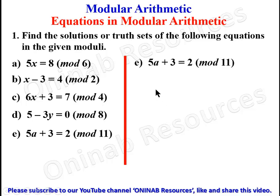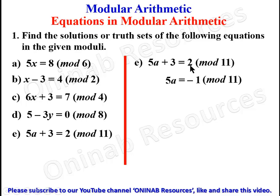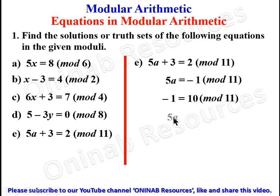Problem (e): 5a + 3 ≡ 2 (mod 11). Taking 3 to the right-hand side gives 5a ≡ -1 (mod 11). Since -1 + 11 = 10, we have 5a ≡ 10 (mod 11). Since 10 is divisible by 5, our equation gives a ≡ 2 (mod 11).